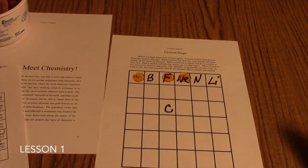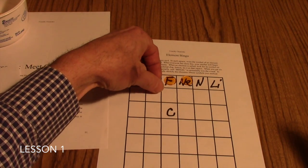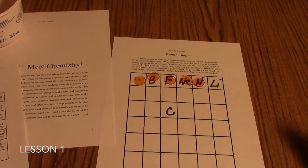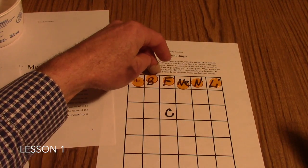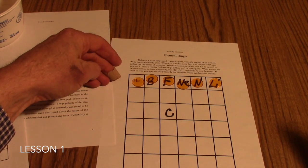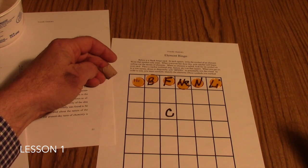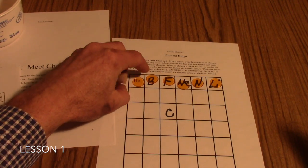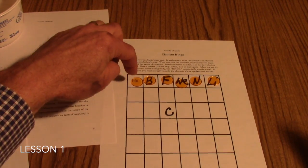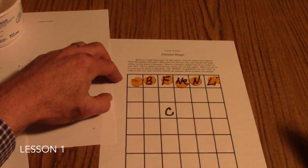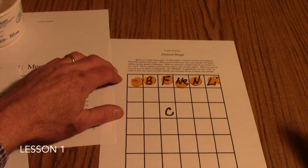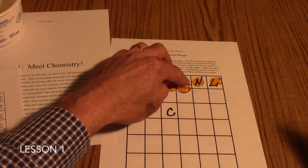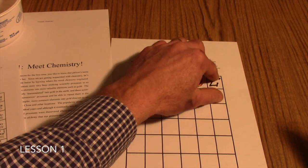In this case, if we got a bingo straight across the top of this card. Let me get one more marker here. For markers you can use these colored chips, pennies, buttons. If you've got a lot of Legos in the house, pass out Legos. You just need something that can mark the symbols that are called. If I got bingo straight across here, before I could earn my point for it, I'd have to say, He is Helium. B is Boron. F is Fluorine. Ne is Neon. N is Nitrogen. And Li is Lithium.